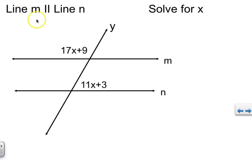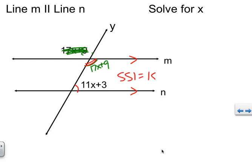Given line M parallel to another line, with Y as the transversal, there's no direct vocabulary word for the relationship between two given angles. But you can move things around — it's legal. Move an angle to the inside using vertical angles since they're congruent. If the equation is 17x plus 9, the vertical angle is also 17x plus 9. Now both angles are same side interior, equaling 180. Move angles closer using congruence to create a new solvable equation.